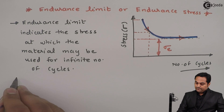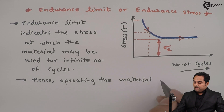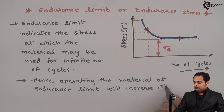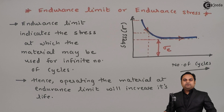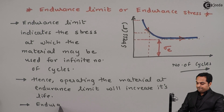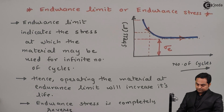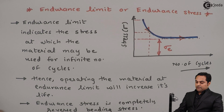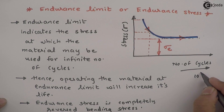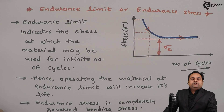Operating the material at endurance limit will increase its life. Endurance stress is completely reversed bending stress, and with the help of endurance limit and endurance stress, the material may operate up to 10 raised to 7 cycles during its lifetime. In this video we have seen what is meant by endurance limit or endurance stress.